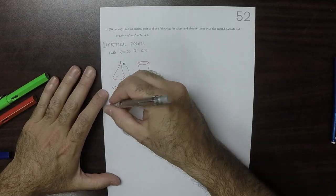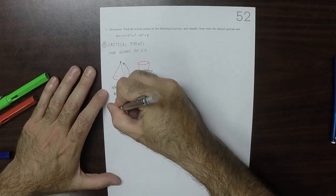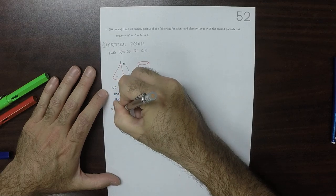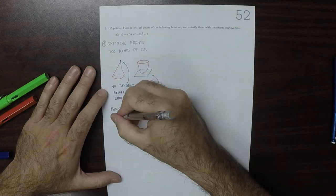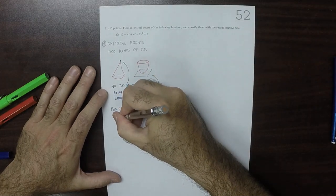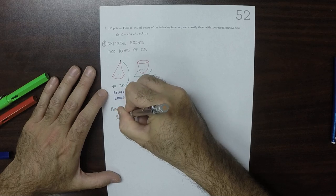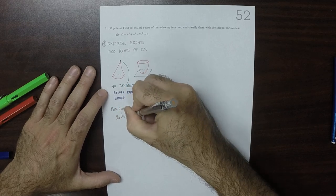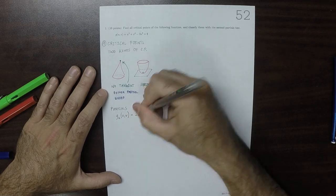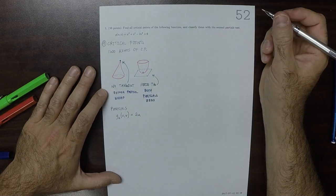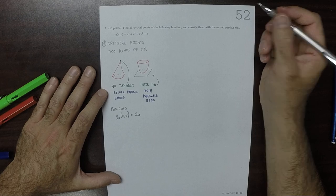So we need the partials. The partials are, so GU, the U partial, is 2U. And that's it.